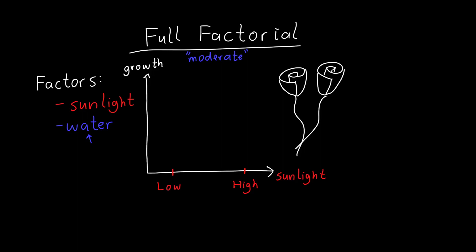We carry out the experiment and find that with a low amount of sunlight the roses grow four centimeters, but in a high amount of sunlight they only grow three centimeters. So it seems we probably want to go with the low amount of sunlight, and maybe there's some better value in between, but if we had to pick one of those two we'd pick the low value.